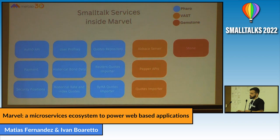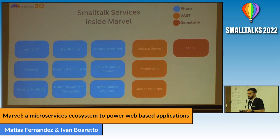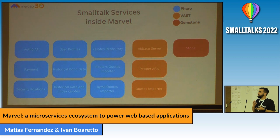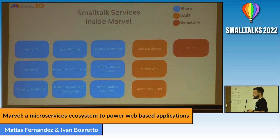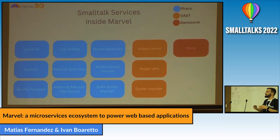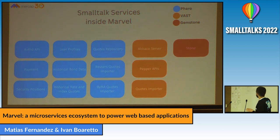Why do we have different dialects? We use Pharo because we think it's really simple to develop on and it works really well with open source software. We use VAST because we think it's really useful for managing complexity and we are very used to working with Envy. We use GemStone because, like VAST, we think it makes complexity easier to work with, and it seems like the obvious choice for Smalltalk persistence.